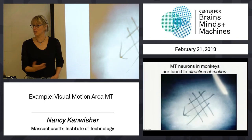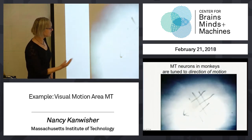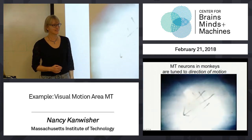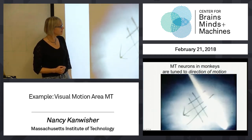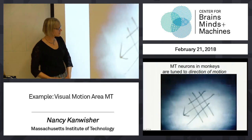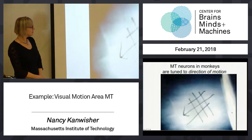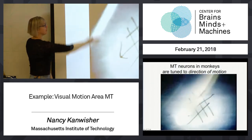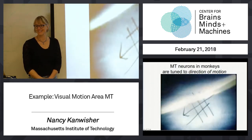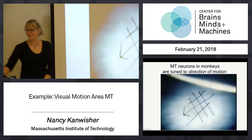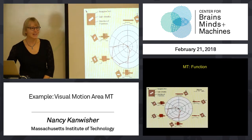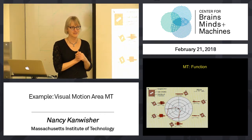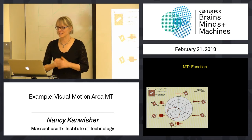It's now outside the receptive field — no response. Now it's in the receptive field and moving in the preferred direction of motion, no response. Pretty soon they're going to change the direction, and then they won't move. It's already a slight change of direction, much lower response. Now no response. That's called direction selectivity.